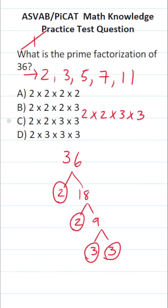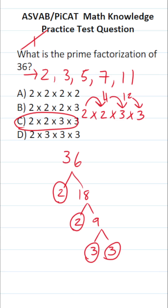We can see that that is answer choice C. You can quickly check your work: 2 times 2 is 4, 4 times 3 is 12, and 12 times 3 is, in fact, 36. So we know we did our prime factorization correctly. The answer is C.